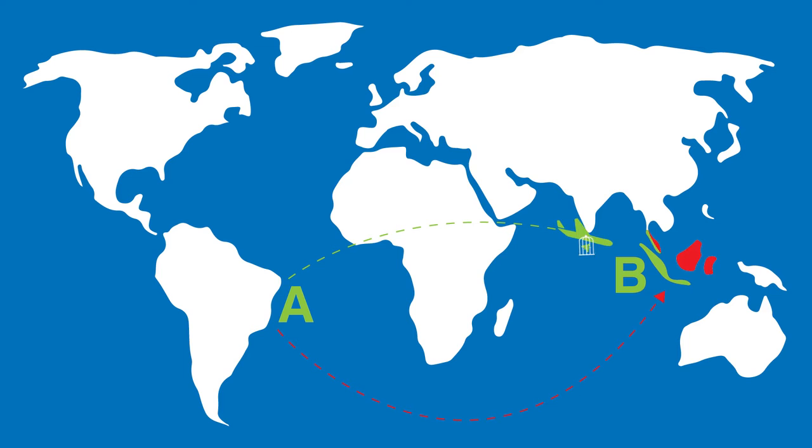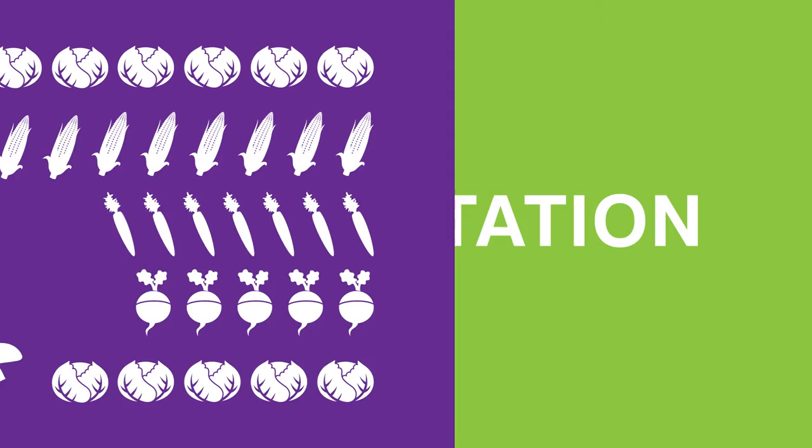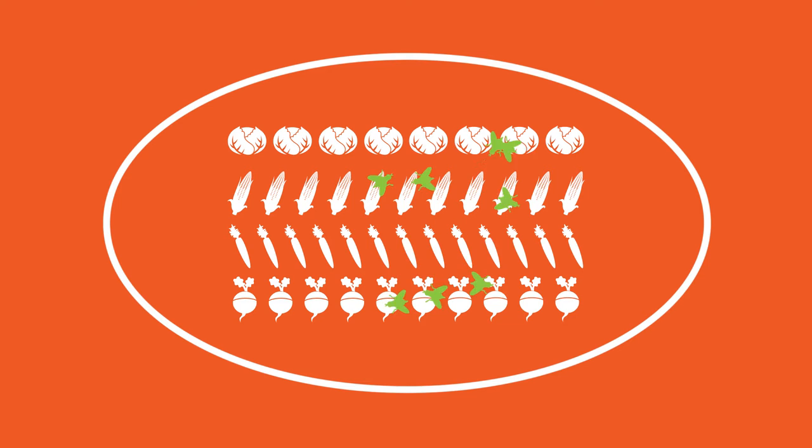What we call augmentation is where we rear natural enemies and release them in order to manage a pest as quickly as possible. Conservation is where we have natural enemies already in the system and we try to conserve them so that they can act whenever necessary against the pest that is residing there.